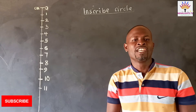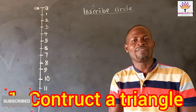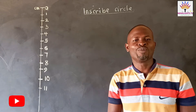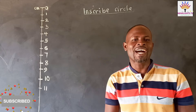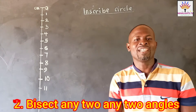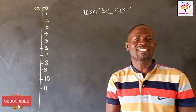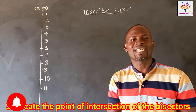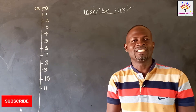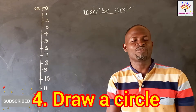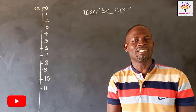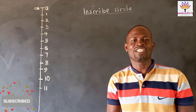So the first step is to construct a triangle of any given dimension. Step two is to bisect any two angles. Then locate the point of intersection of the bisectors and name it as O. Then you take a suitable radius to draw a circle to touch the three sides of the triangle — that is, within the triangle.